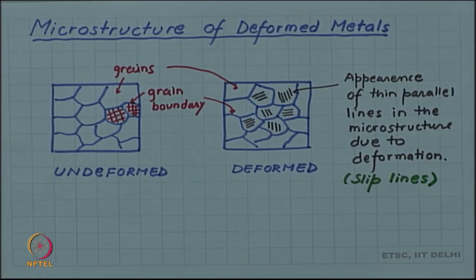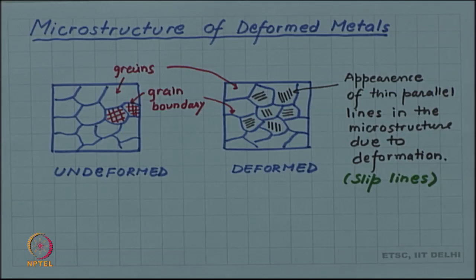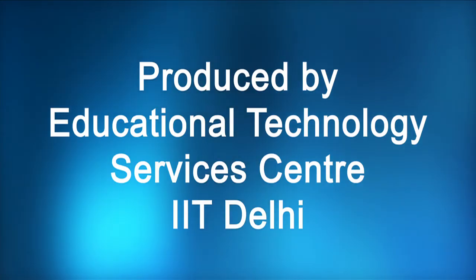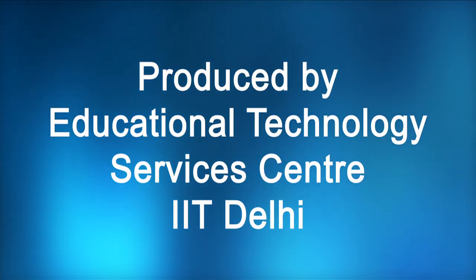The X-ray diffraction observation and the microstructural observation both indicated this slip model of deformation, which leads to change in shape of the material — change in the shape of the crystal — without change in the internal crystal structure.